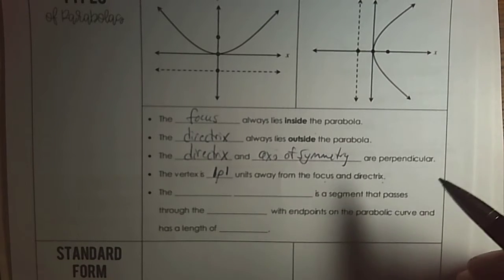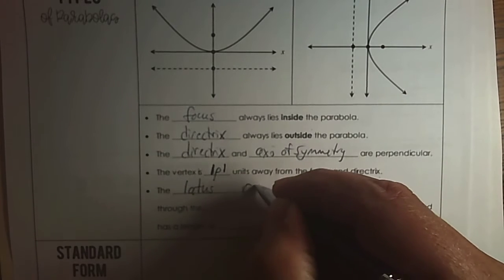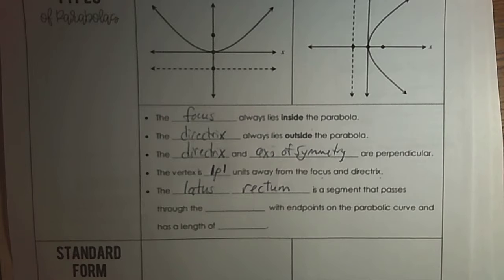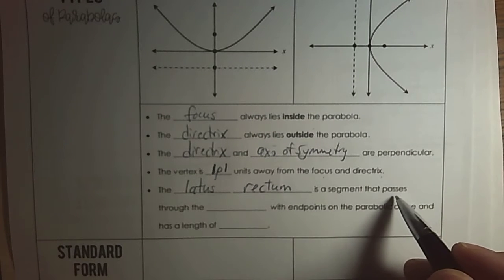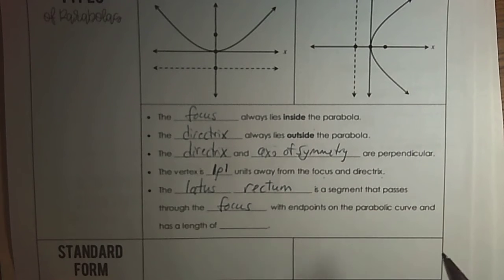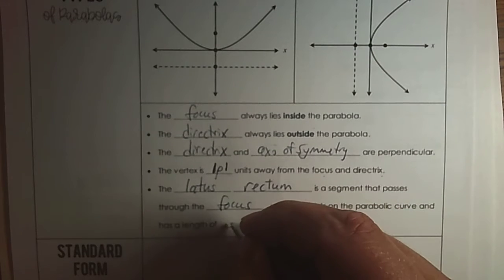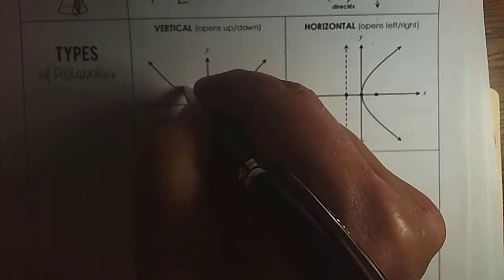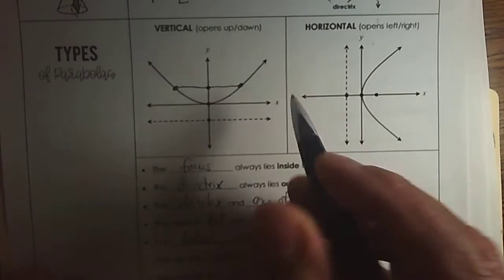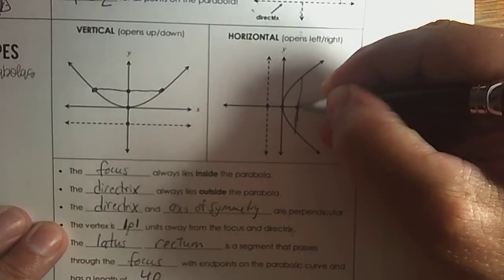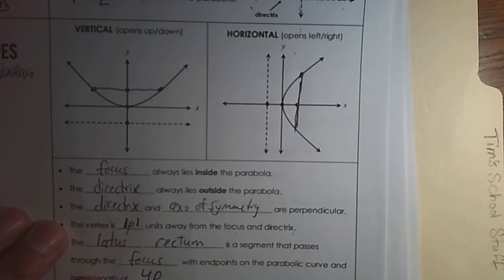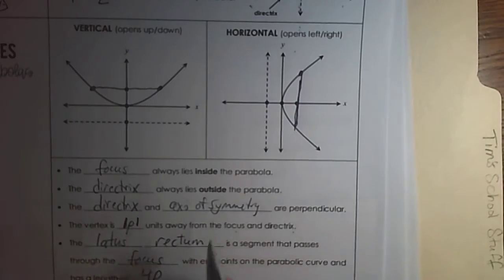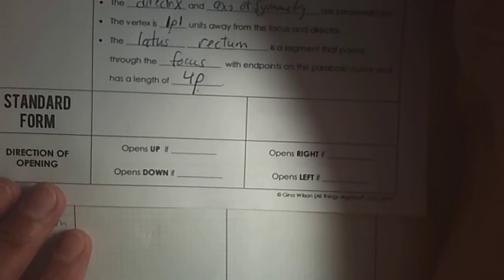Now there's a new term: the latus rectum. That's a mathematical word. The latus rectum is a line segment that passes through the focus with endpoints on the parabola curve and always has a length of 4P. That's going to help us understand what P equals. If you drew a line going straight through the focus with endpoints on the parabola, that's called the latus rectum, and that distance is 4P — which helps us find the focus and directrix.